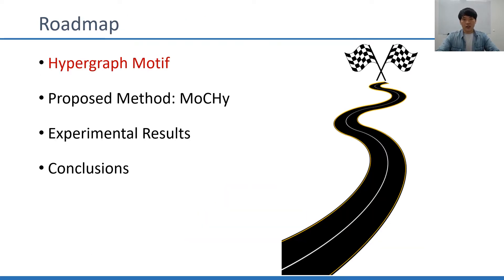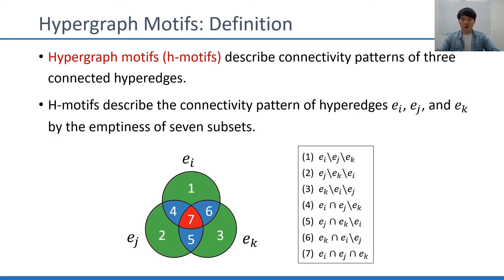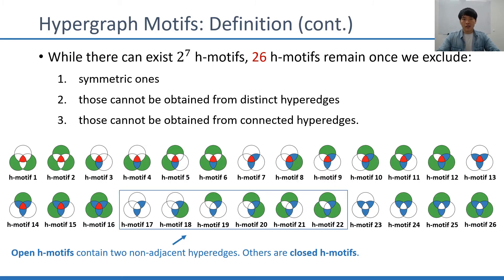To answer these questions, we defined a new concept called hypergraph motifs. Hypergraph motifs, or H-motifs, are basic building blocks of hypergraphs. They describe connectivity patterns of three connected hyperedges. Their connectivity patterns are naturally represented as the Venn diagram with seven subsets, and we consider the emptiness of each subset to describe the pattern. While there can exist more than a hundred different types of patterns with seven subsets, only 26 patterns remain once we exclude symmetric ones, those that cannot be obtained from distinct hyperedges, and those that cannot be represented by connected hyperedges.